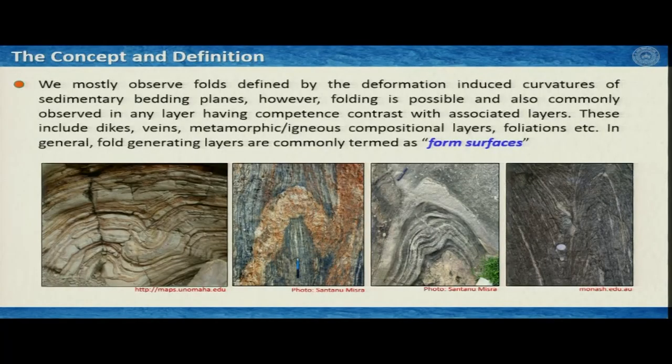A fold can be of various scales. This indicates that the fold mechanism — the way folds form — is a very constant process, but their scales could be different. You can see folds at an orogenic scale, and you can also see folds under a microscope, even under transmission electron microscopes, where the length of a fold is in the nanometer scale.